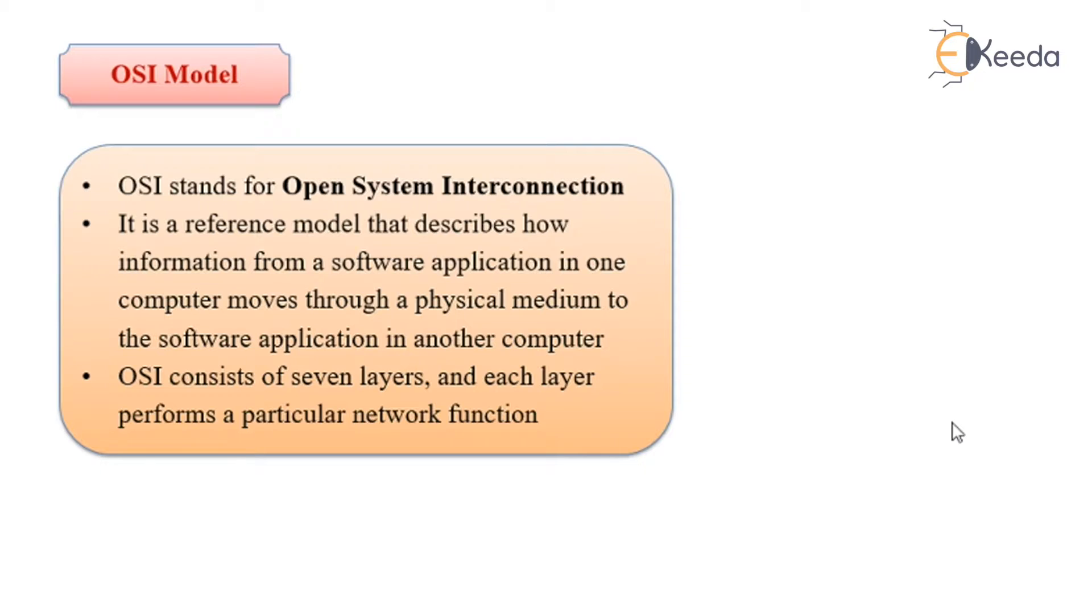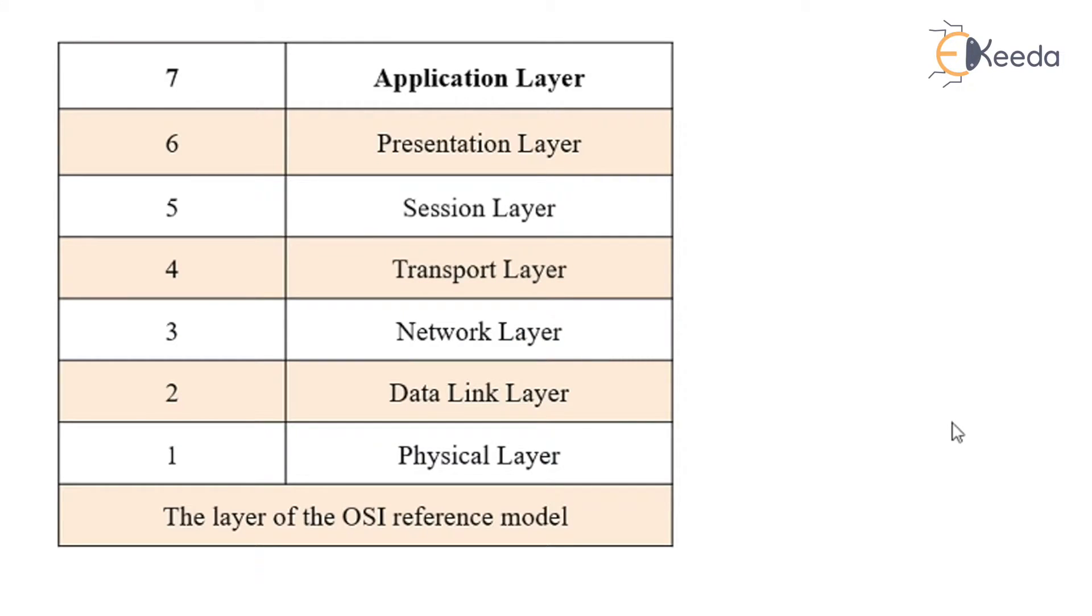The OSI model consists of seven layers and each layer performs a particular network function. Now let us look at the diagram of the OSI reference model. The first layer is the physical layer, the second layer is the data link layer, third layer is the network layer, fourth is the transport layer, fifth one is the session layer, sixth one is the presentation layer, and finally there is the application layer.